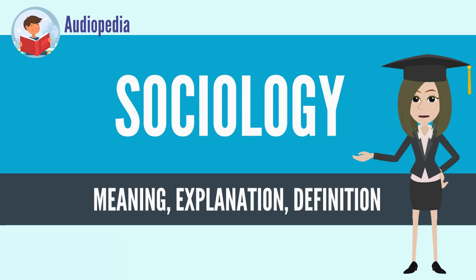Subject matter ranges from the micro-sociology level of individual agency and interaction to the macro level of systems and the social structure. The different traditional focuses of sociology include social stratification, social class, social mobility, religion, secularization, law, sexuality, gender, and deviance.